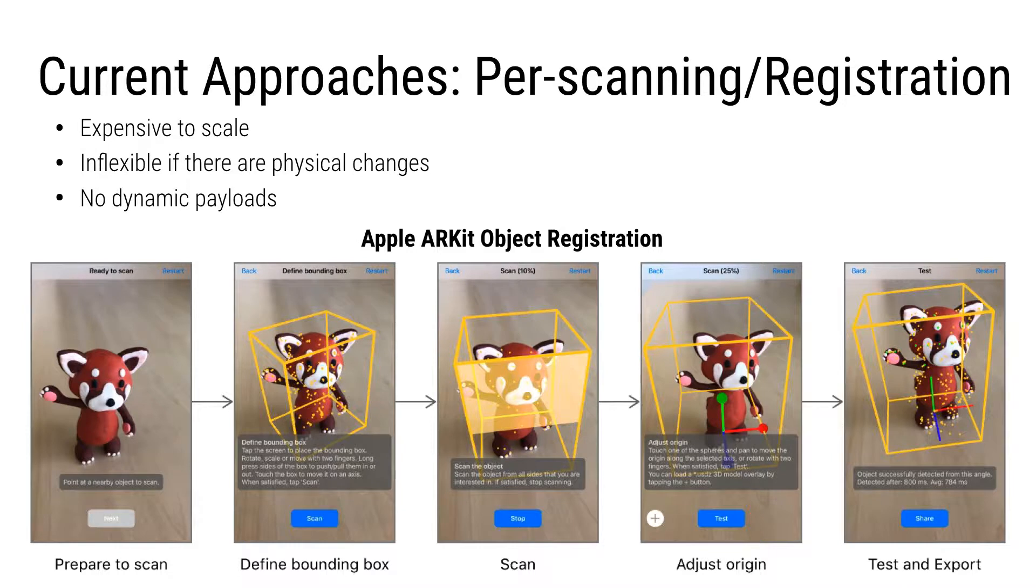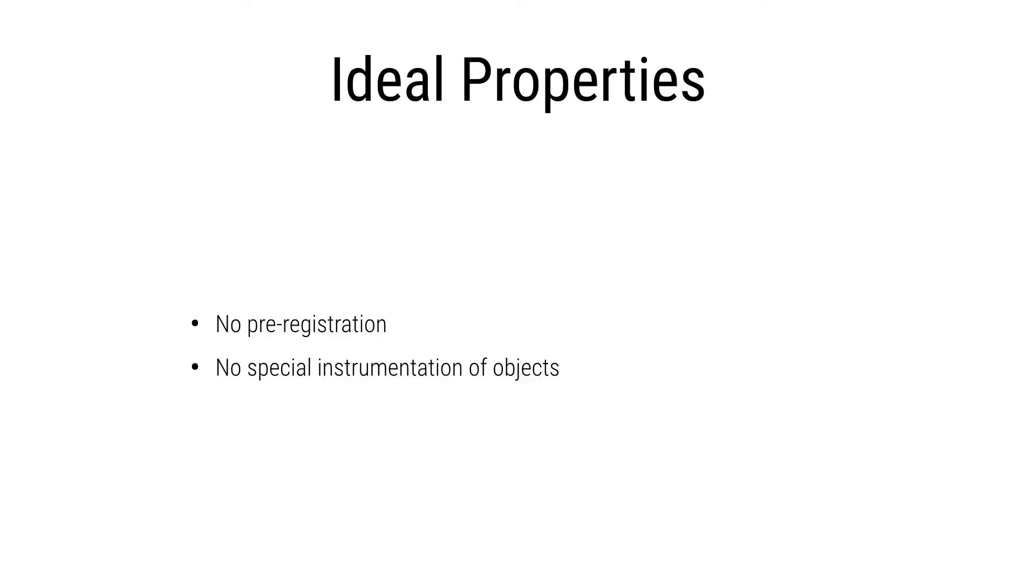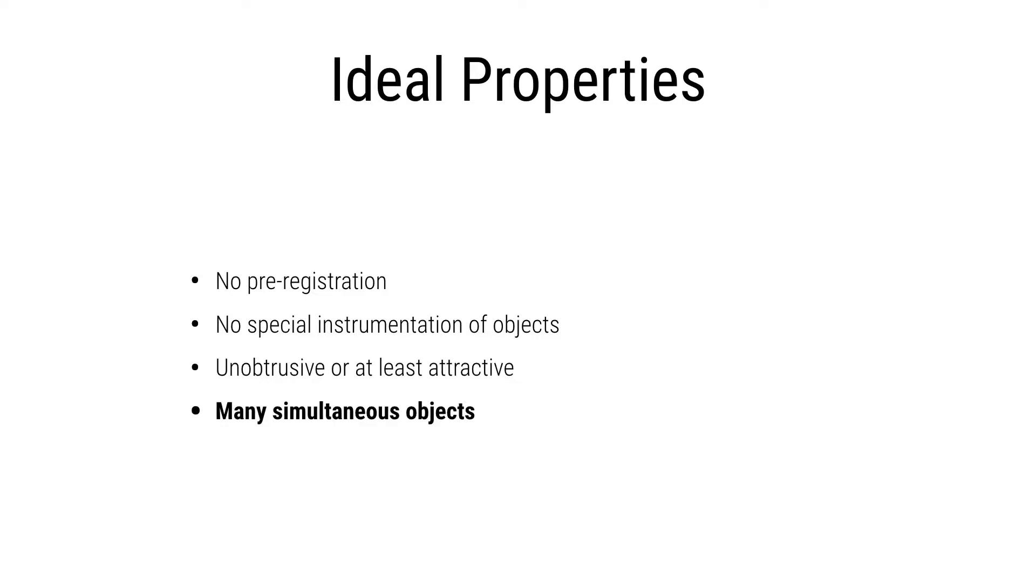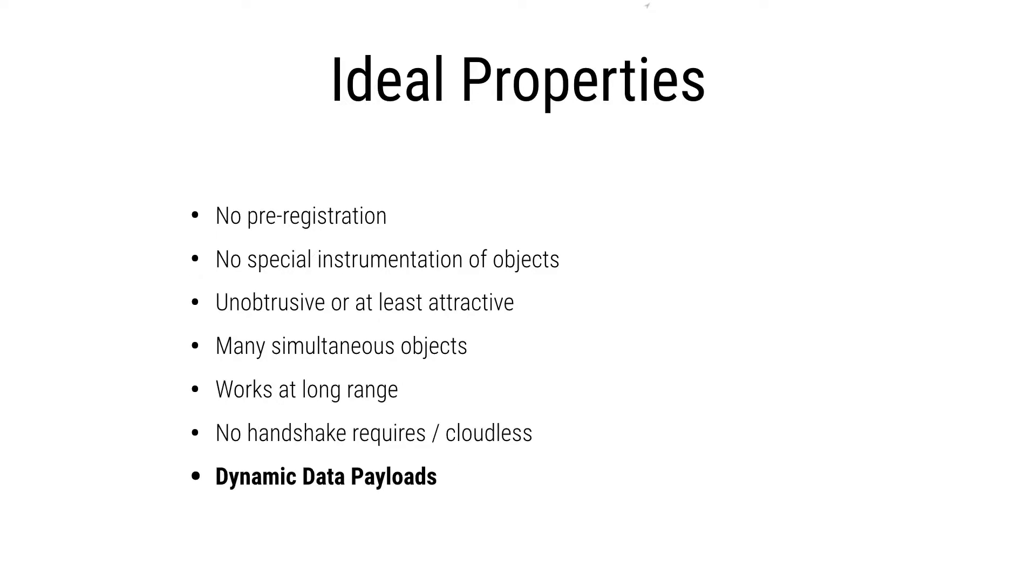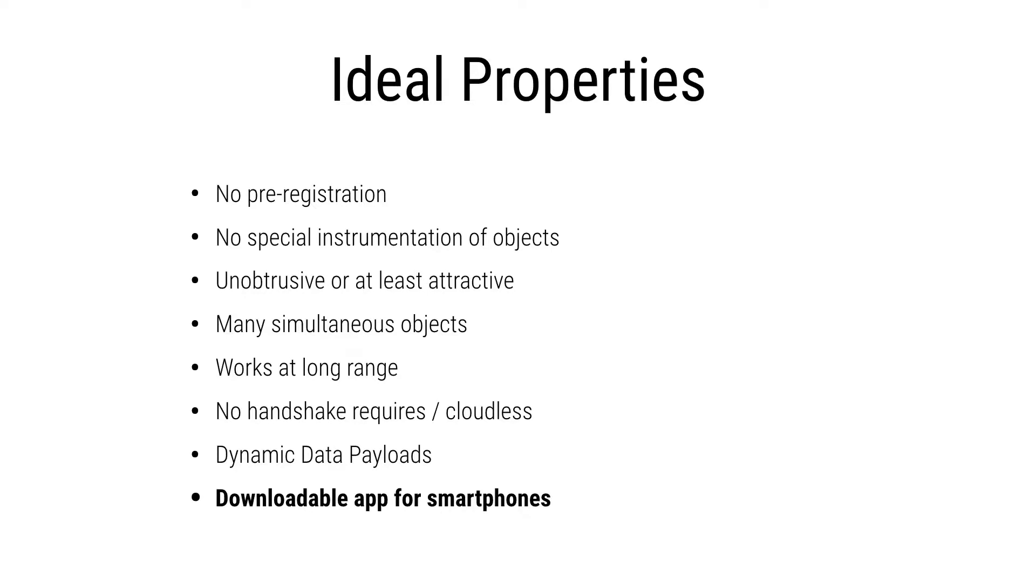It has no way to disambiguate between two same objects. For example, I have two of these same bears, so it will have no way to tell the difference between these two things. Let's look at the things that we ideally want in a system or this ecosystem. We require something where there is no pre-registration or special instrumentation of objects, is unobtrusive or at least attractive in nature, and it can detect many simultaneous objects transmitting simultaneously.